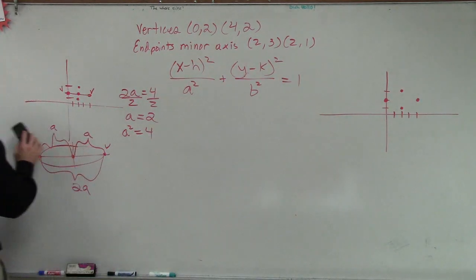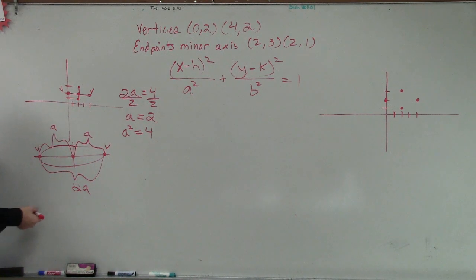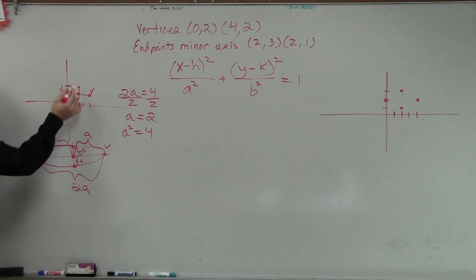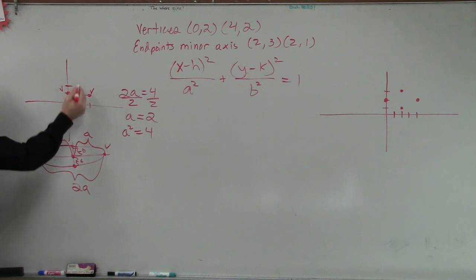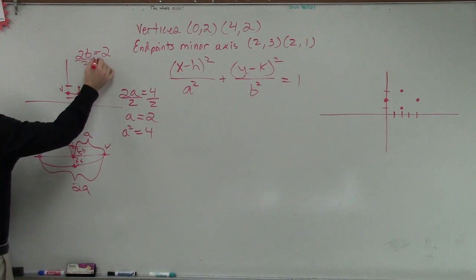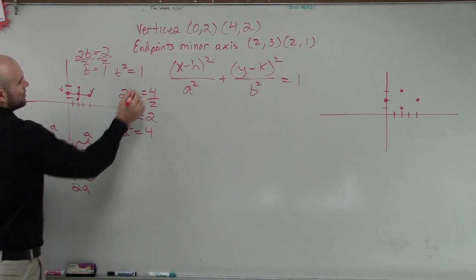So, now we're given also the distance of B. So, remember from this point, from your minor axis, from here to here is B. And from here to here is B. So, therefore, the total distance of the minor axis is what? Two B. Two B. So, let's count. How long is this distance? One. One, two. So, we could say two B is equal to two. Therefore, B equals one. And we could say B squared equals one.